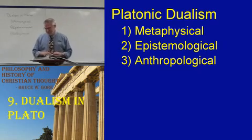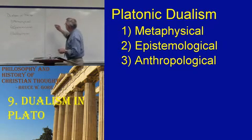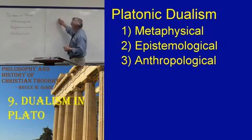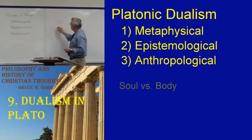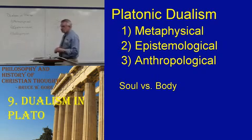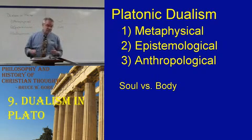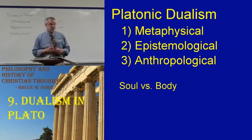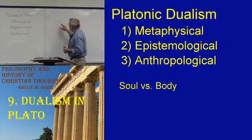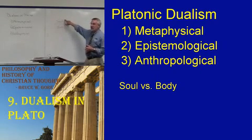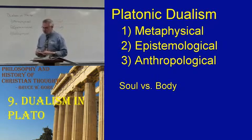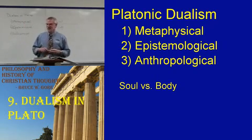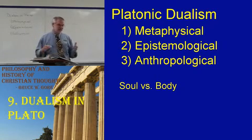Plato says the same thing. He says that this two-fold metaphysic — the ideal and the receptacle — translates in your world into the conflict between what he calls your soul and your body. Your soul comes from the perfect world of ideals; your body comes from the receptacle material world. Your soul is immortal — he has arguments for the immortality and fundamental indestructibility of the soul. Your body is transient: it comes from the earth and returns to the earth.